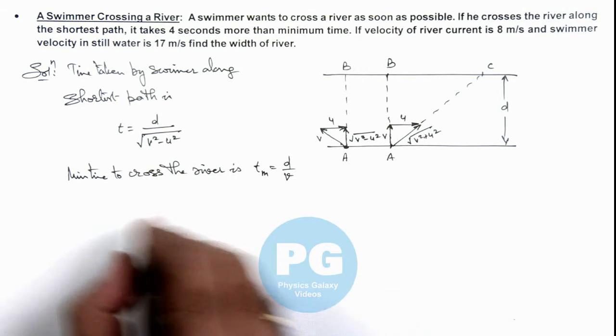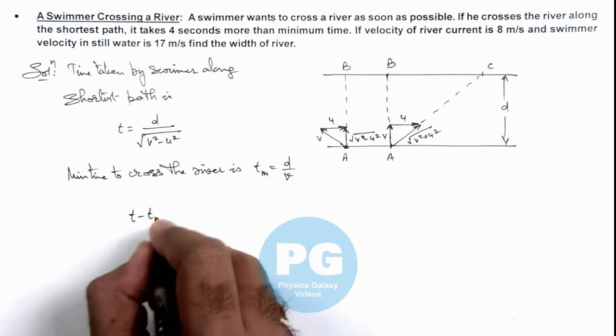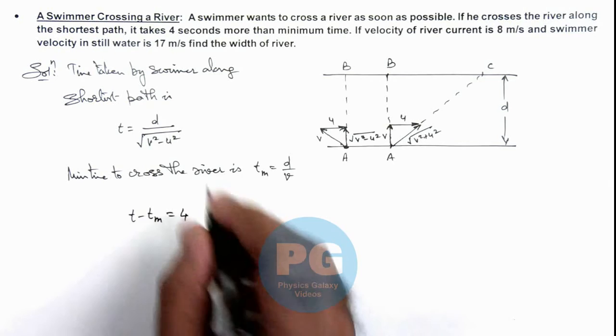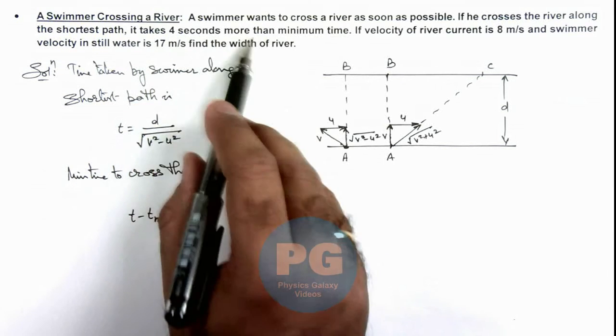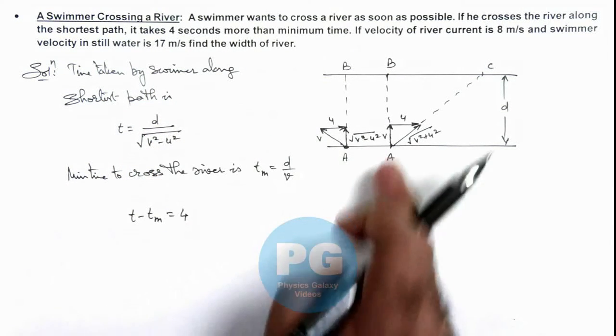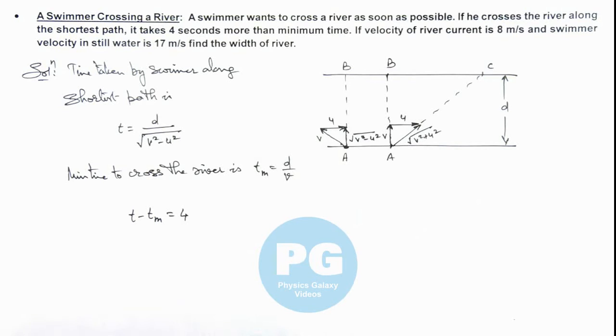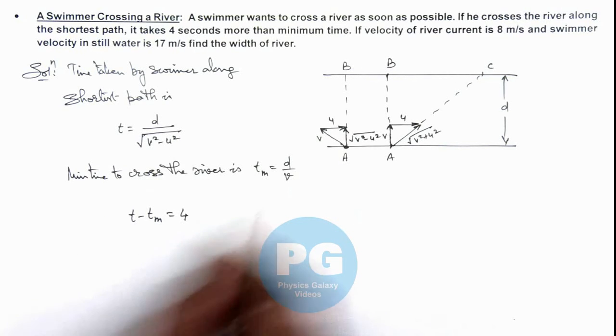And we are given that T minus Tm is equal to 4, because we are given that it takes 4 seconds more than minimum time if he is crossing along the shortest path.